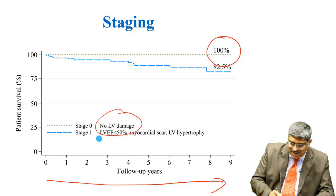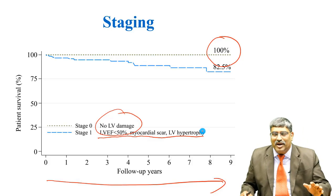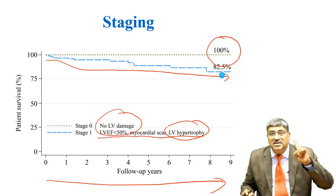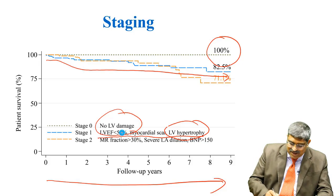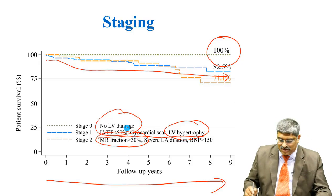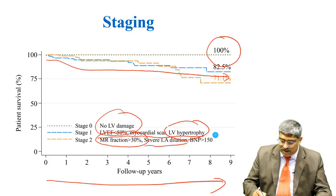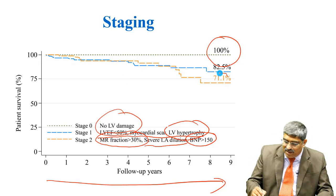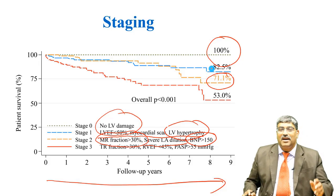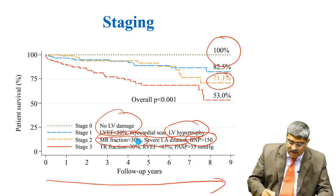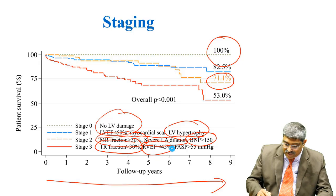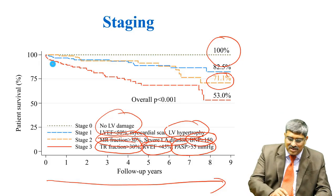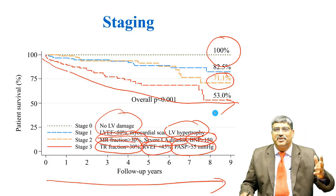In Stage 1, ejection fraction is slowly coming down with slight myocardial scarring and LV hypertrophy, and 10-year survival is 80%. In Stage 2, back pressure has caused MR greater than 30%, there is severe LA dilatation, BNP is greater than 150, and 10-year survival is 71%. In the final stage, the right side is also affected: TR is 30%, right ventricular ejection fraction has fallen to 45%, PA pressure is greater than 55 mmHg, and 10-year survival drops to 53%.